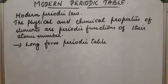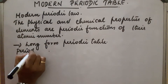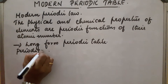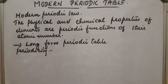Now, what is meant by periodicity? Periodicity means the periodical repetition of elements with similar properties after regular intervals, when the elements are arranged in the increasing order of atomic number.